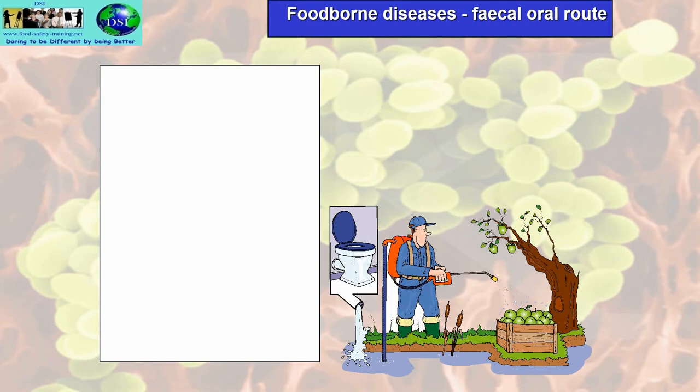Foodborne diseases enter our system via the faecal-oral route. This is really where faeces come into contact with our mouth from outside sources — for example, where sewage has gone directly into water supply, which occurs throughout the UK regularly, especially when there's stormy weather or floods. Raw sewage goes into rivers, estuaries and the sea, and if this comes in contact with your mouth, you will get a foodborne disease.